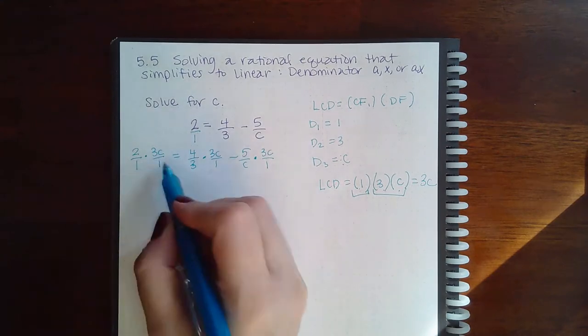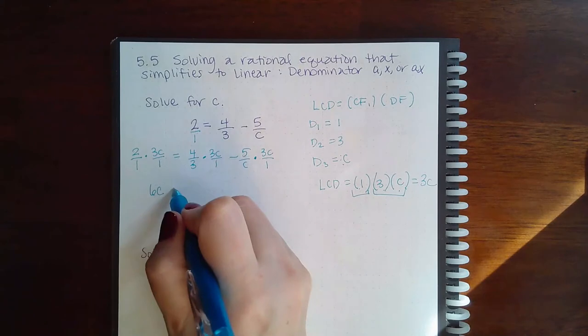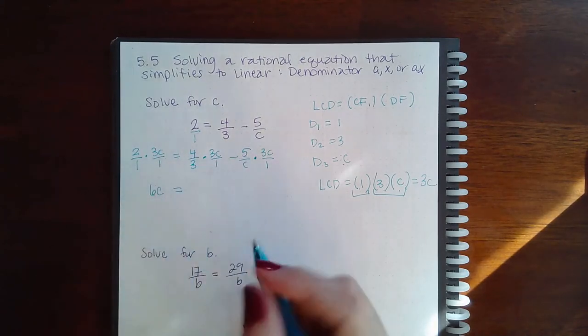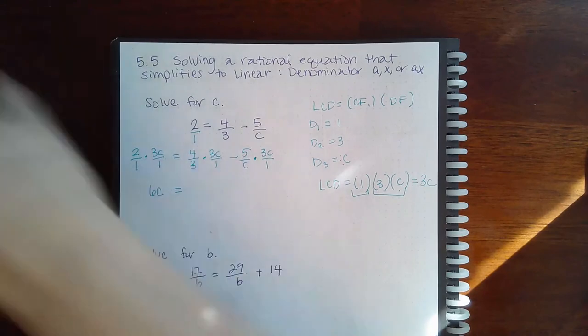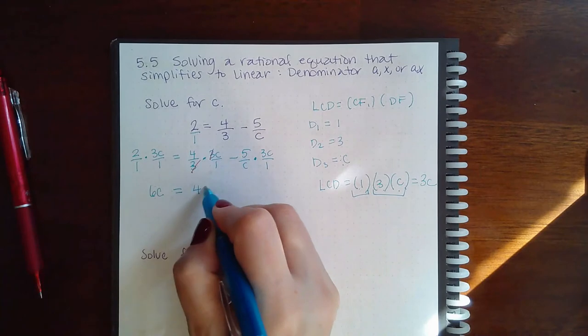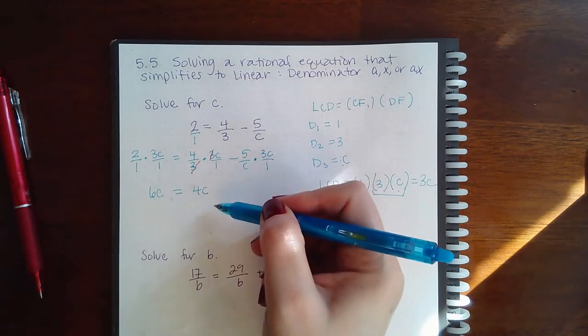So, here, there's nothing to cancel. I just end up with 60 after multiplying them. And because they're over 1, I don't have to include the denominator. Here, though, I do have the factor 3 that will cancel. So, when I multiply, I get 4C, and if it's over 1, it's just the whole number.